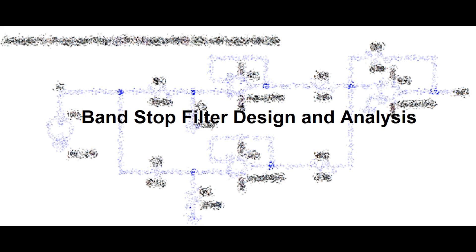The band stop filter is another type of frequency selective circuit that functions in exactly the opposite way to the band pass filter — I have already made a video on the band pass filter which you can find on my channel. The band stop filter is also known as a band reject filter, same as the notch filter. It passes all frequencies with exception of those within a specified stop band which is greatly attenuated. If this stop band is very narrow and highly attenuated over a few Hertz, then this stop band filter is referred to as the notch filter, as we have seen in our previous video.